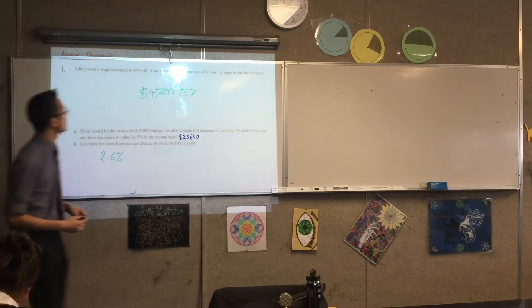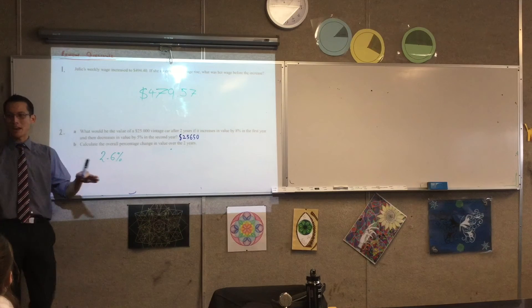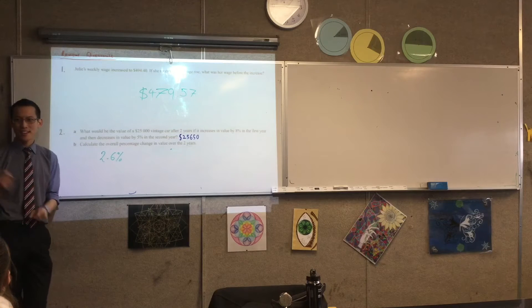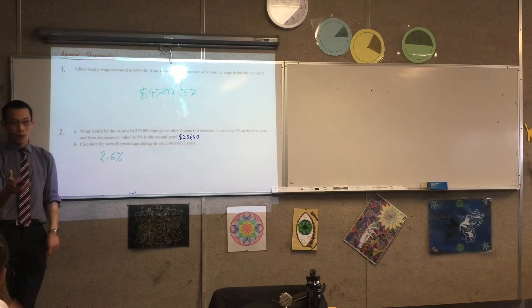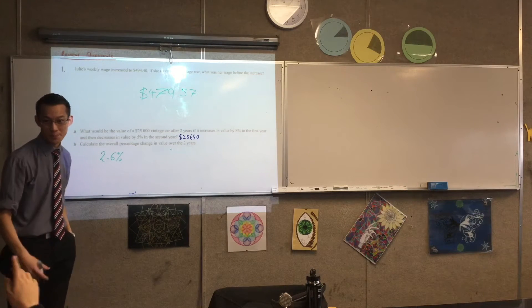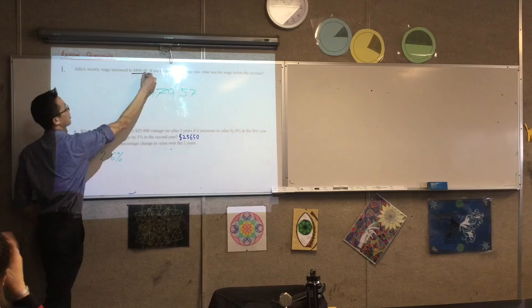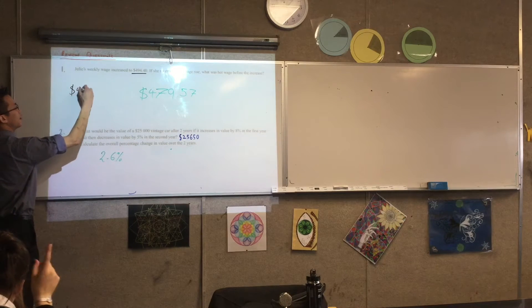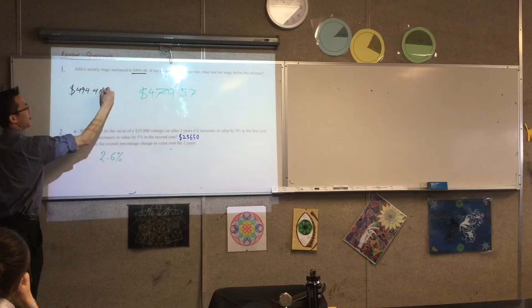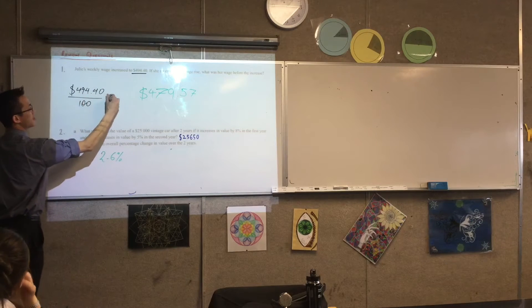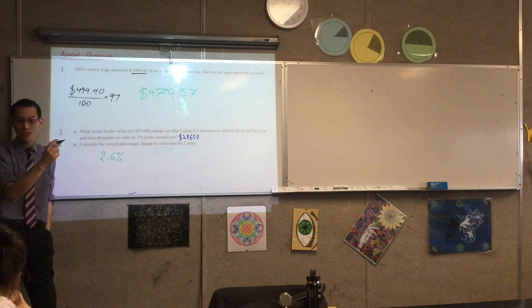Someone tell me where this $479.57 of whatever denomination comes from. No, no, no, this is fine. I want someone else to help me out. Sophie? You get the original amount and you divide it by 100 and then you times the answer by 97. Okay, this is what you're suggesting that I do? Yes.